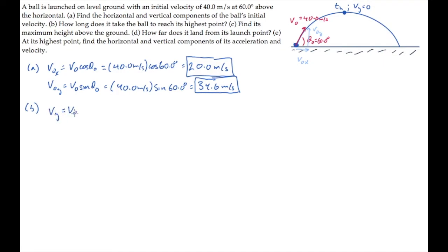We'll solve for that time using the time-dependent velocity equation. At the time T sub H, V sub Y equals 0, the final y component of velocity. So we can solve for that time. It equals the initial y component of velocity divided by G. Substitute values and calculate to find that it equals 3.53 seconds.